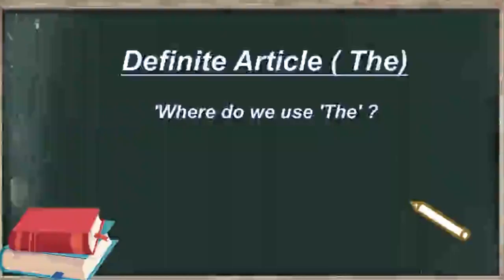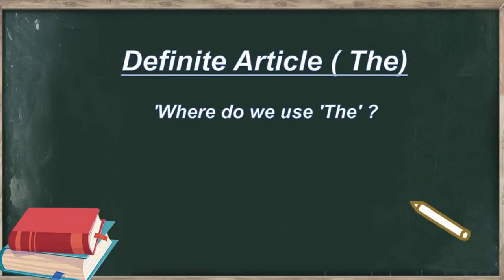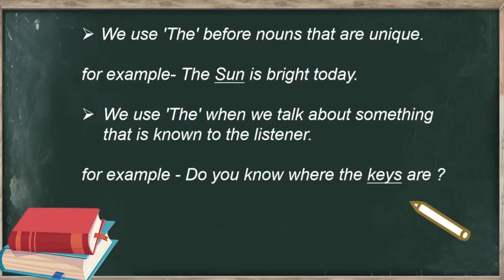That was all about indefinite articles. Now let us start with the definite article. Where do we use 'the'? We use 'the' before nouns that are unique. For example, 'The sun is bright today' — the sun is unique in itself, so we used 'the' before it.